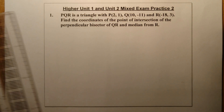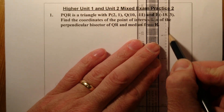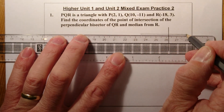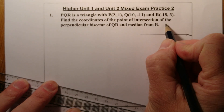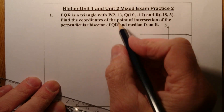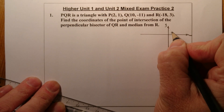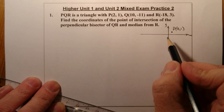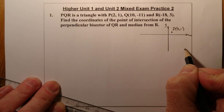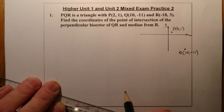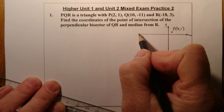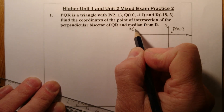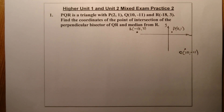First thing I'm going to do is draw a quick sketch of what we've got here. So there's my x-coordinates going in that direction, y in that direction. I'll just plot the points: P at (2, 1), Q at (10, -11) - so 10 along and down 11, and R at (-18, 3) - way along to the left and up 3. I'll draw up my triangle.